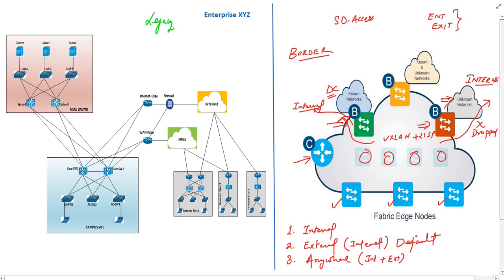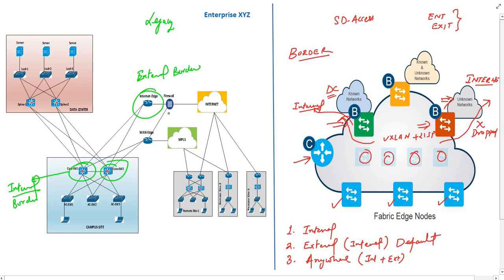Comparing this with the legacy network on the left, these core switches will be the internal border routers because they are connected to data center networks, which are known networks or routes. This internet router will be our external or default border router, as it connects to unknown routes. So here is a question: what type of border router should replace the WAN edge router in SD-Access — internal or external border? Please comment in the comment section.